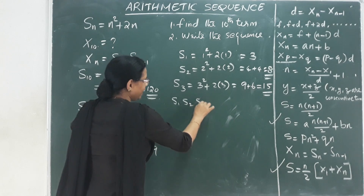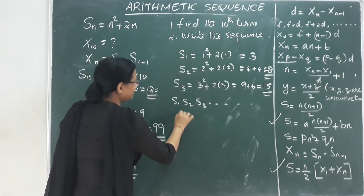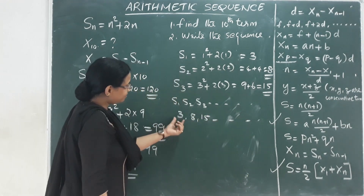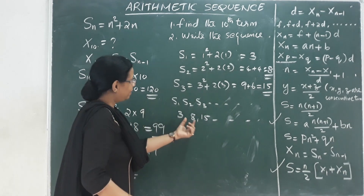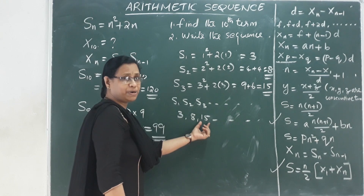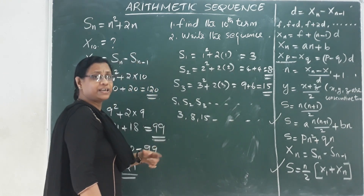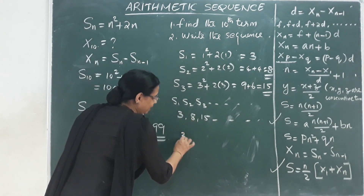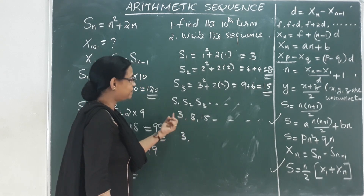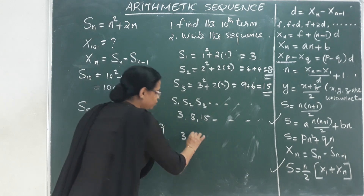The first term is the sum of the first term, which is 3. The sum of the third term is 15. The second term is found by subtracting: S2 minus S1, that is 8 minus 3, which means 5.